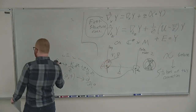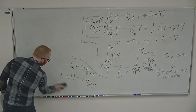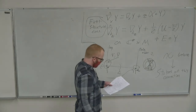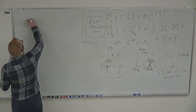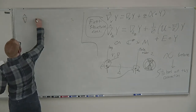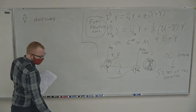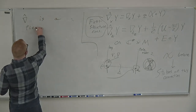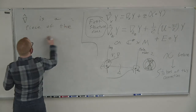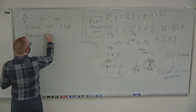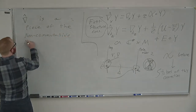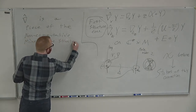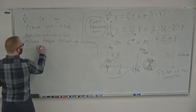There's a relationship between this first structure connection and the second structure connection. The second structure connection we know it's a Gauss-Manin connection. These two are Fourier-Laplace duals of each other — if you take a Fourier-Laplace transformation you can go from one to the other. One of the things I want to talk about is that this first structure connection defines — or is a piece of — the non-commutative mixed Hodge structure for my function.